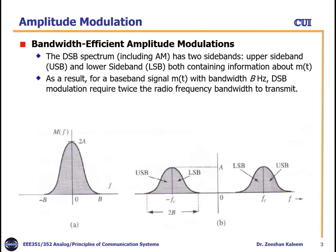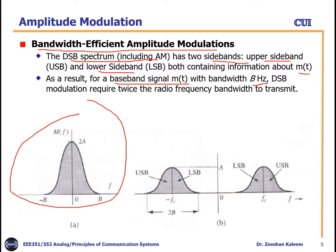Why do we need single sideband modulation? It is called bandwidth-efficient amplitude modulation. The double sideband spectrum has two sidebands — upper sideband and lower sideband — both containing information about m(t). For a baseband signal with bandwidth B hertz, double sideband modulation requires twice the radio frequency bandwidth — 2B — to transmit the signal.